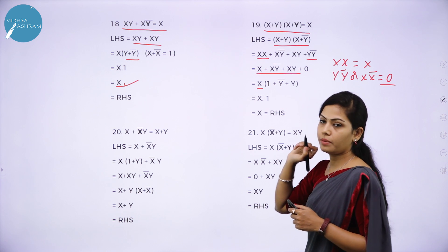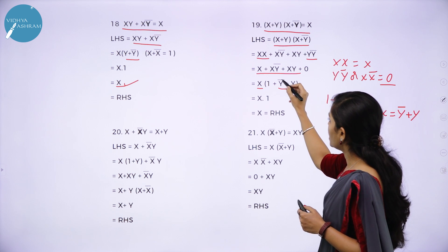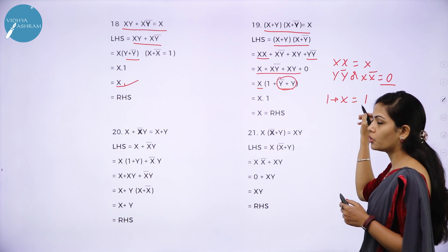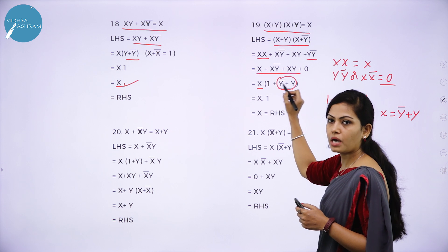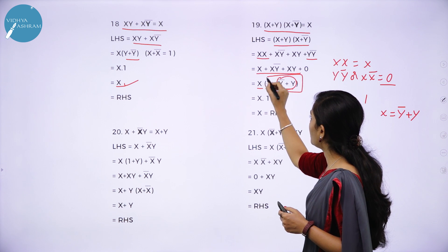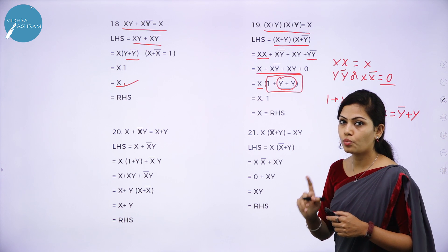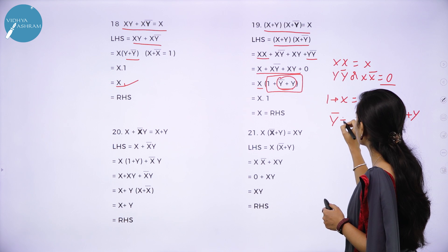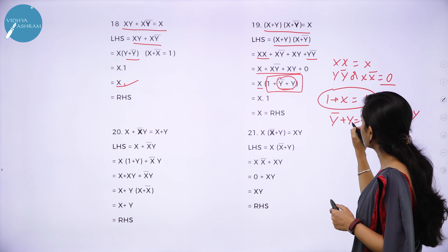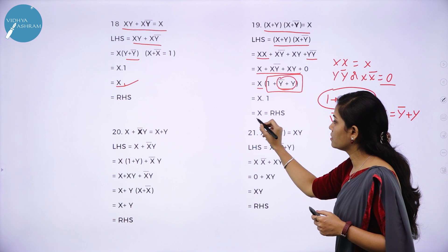You will get x(1 + y̅ + y). Assume y̅ + y equals some value; since 1 + x = 1 (already proved), 1 + y̅ + y = 1. So x × 1 = x, which is your RHS. LHS equals RHS, proving theorem 19.